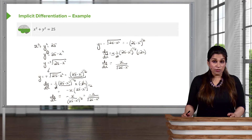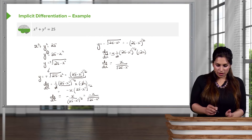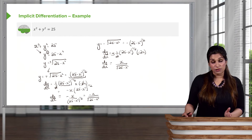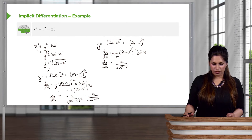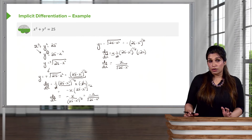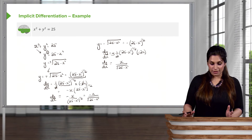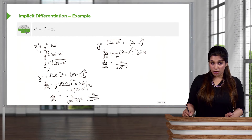There is another method called implicit differentiation, which means you don't have to rearrange the equation in terms of y. You can just differentiate it in one go. Not all equations can be rearranged, so it's important we learn how to differentiate implicitly — it just makes our lives easier. Let's do the same question now using the implicit method.